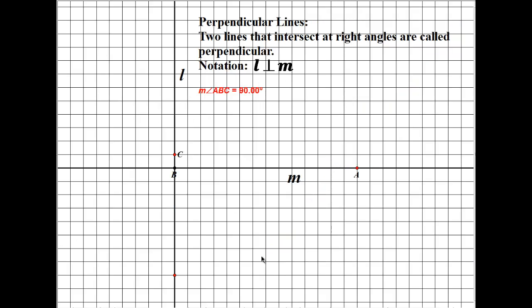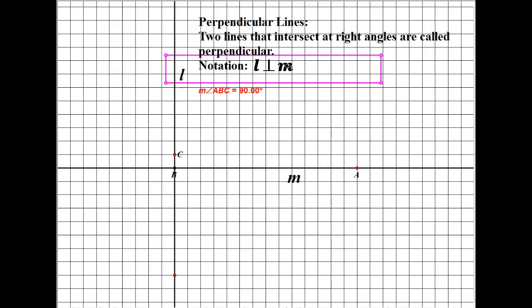Two lines are called perpendicular to each other if the two lines intersect each other at 90 degrees. The notation L ⊥ M means that these two lines are perpendicular.